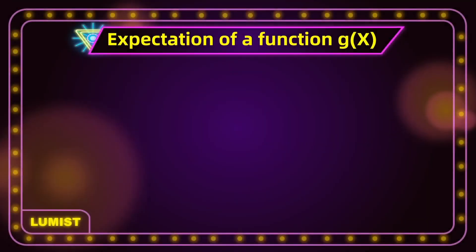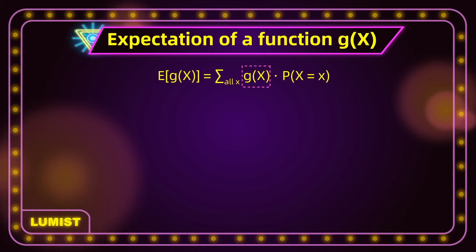The expected value is calculated by summing the product of all the possible values that a random variable can take and their corresponding probabilities. So the expectation of x is equal to the sum of all the possible x values that the random variable can take, multiplied by their corresponding probabilities. Now how do we find the expectation of g(x)? The expected value of g(x) is equal to the sum of g(x) for all the x values, multiplied by their corresponding probabilities. We just plug and chug.